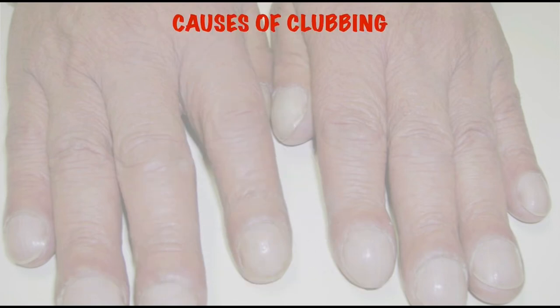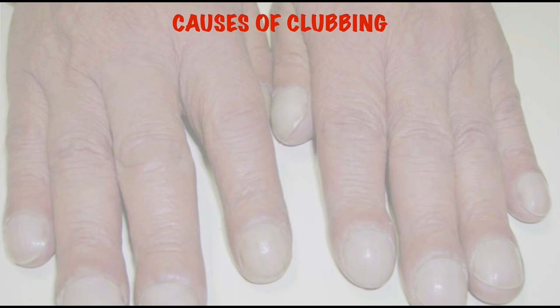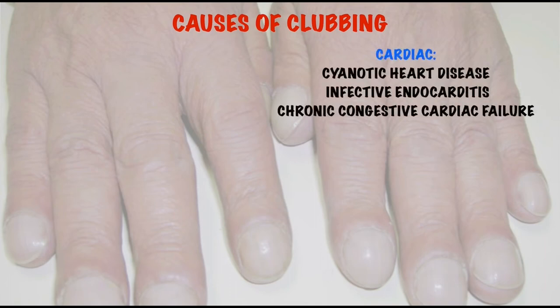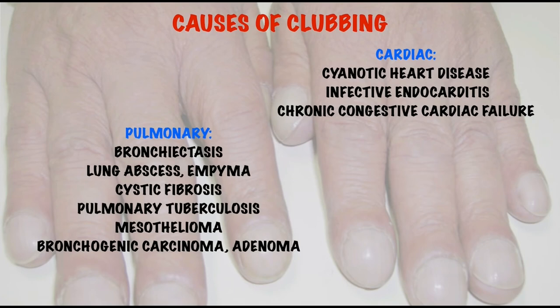You can also remember the causes of clubbing as per the system involved. Primary causes include idiopathic or familial. Cardiac causes include cyanotic heart disease, infective endocarditis, and sometimes chronic congestive cardiac failure. Pulmonary causes — very importantly — include bronchiectasis, lung abscess, empyema, cystic fibrosis, pulmonary tuberculosis, mesothelioma, bronchogenic carcinoma, and adenoma.